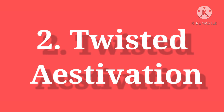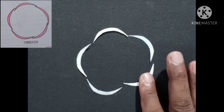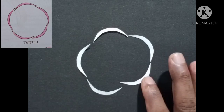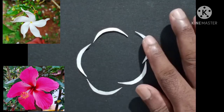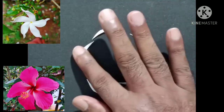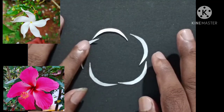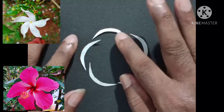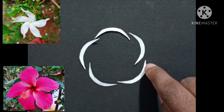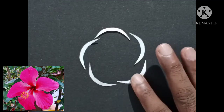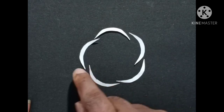The second is Twisted Estivation. In Twisted Estivation, one margin regularly overlaps the margin of the adjacent sepals or petals. Examples include ladies finger and cotton. One side of each petal is in, and the other side is out. This is Twisted Estivation, also called Contorted Estivation.